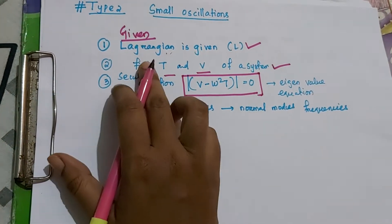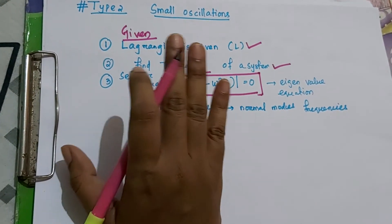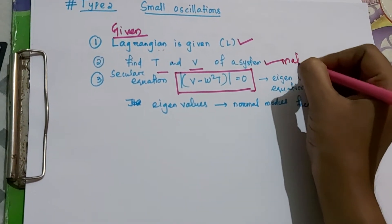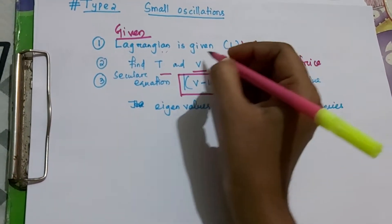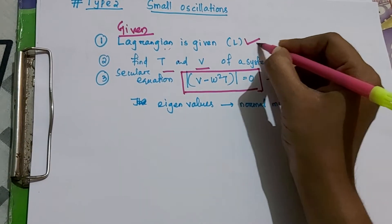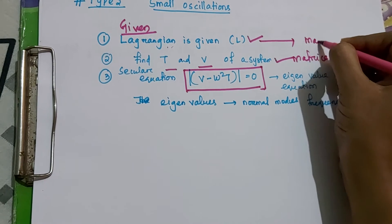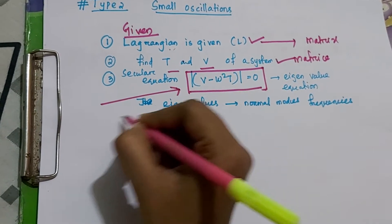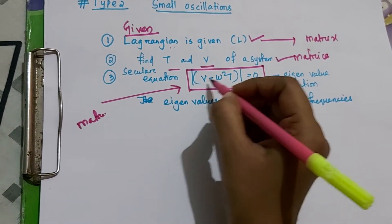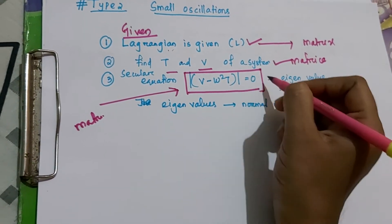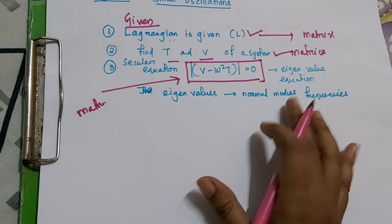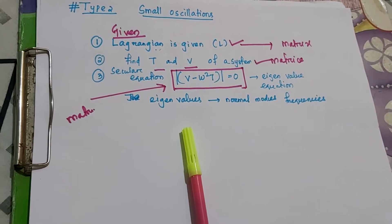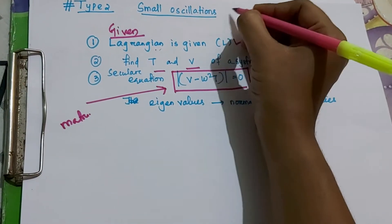So you have to find the Lagrangian, and after that separate T and V and write them in matrix format. The secular equation is also in matrix format. You have to find the determinant, equate it to zero, and from there you will get the eigenvalues — those eigenvalues are the normal mode frequencies. This is an important question you will definitely encounter in GATE and NET exams.